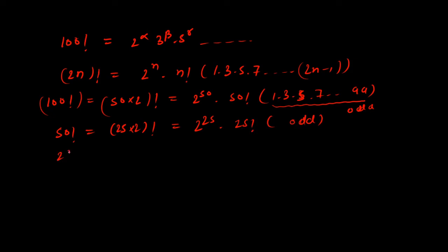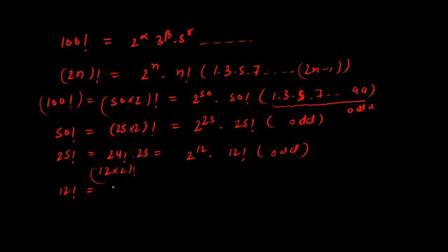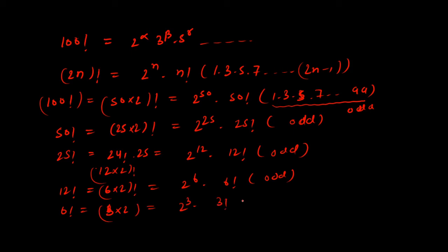Now for 25! — this is the tricky part. We cannot write 25 as 2 times an integer directly, so we write 25! = 24! × 25, and then 24! = (2×12)!, giving 24! = 2^12 × 12! × (odd numbers). Similarly, 12! = (2×6)! gives 2^6 × 6! × (odd numbers). And 6! = (2×3)! gives 2^3 × 3! × (odd numbers).